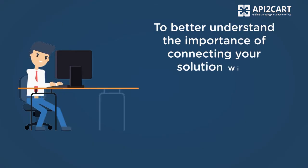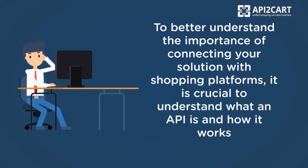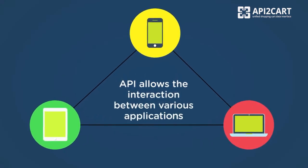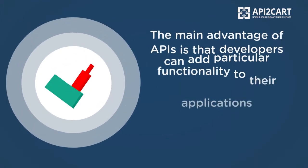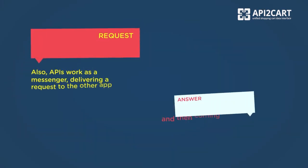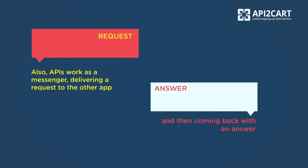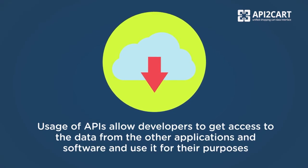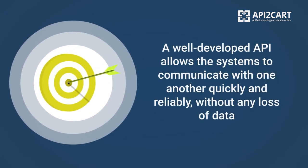To better understand the importance of connecting your solution with shopping platforms, it is crucial to understand what an API is and how it works. API, or Application Programming Interface, is a mechanism that allows the interaction between various applications. The main advantage of APIs is that developers can add particular functionality to their applications, eliminating the need to write all of the code by themselves. Also, APIs work as a messenger, delivering a request to the other app and then coming back with an answer. Usage of APIs allows developers to get access to the data from other applications and software and use it for their purposes. A well-developed API allows the systems to communicate with one another quickly and reliably, without any loss of data.